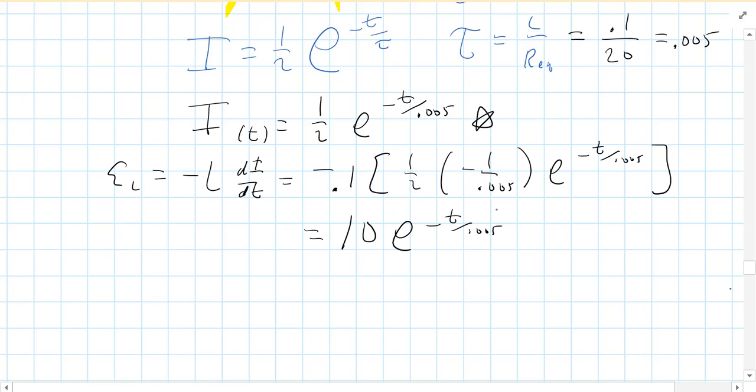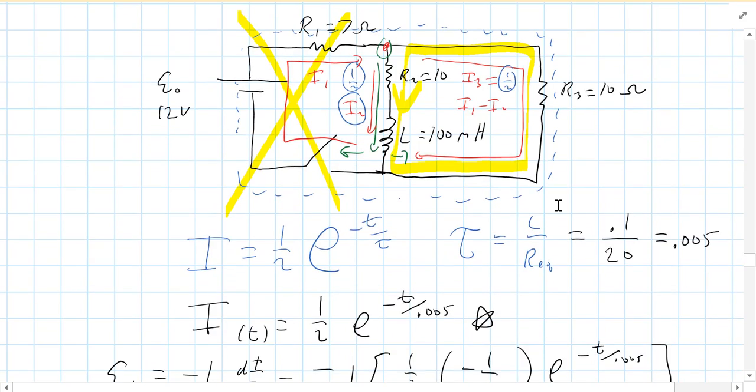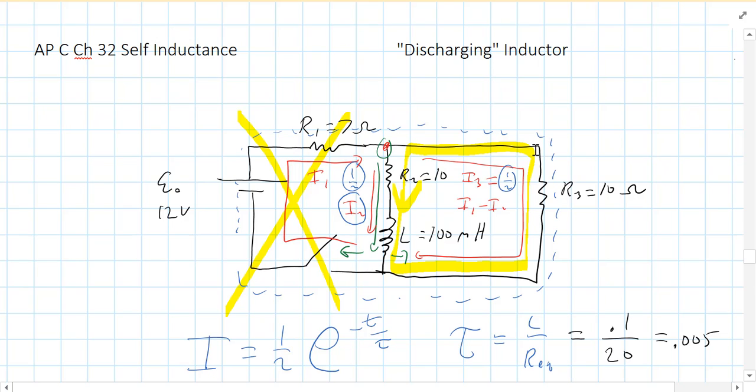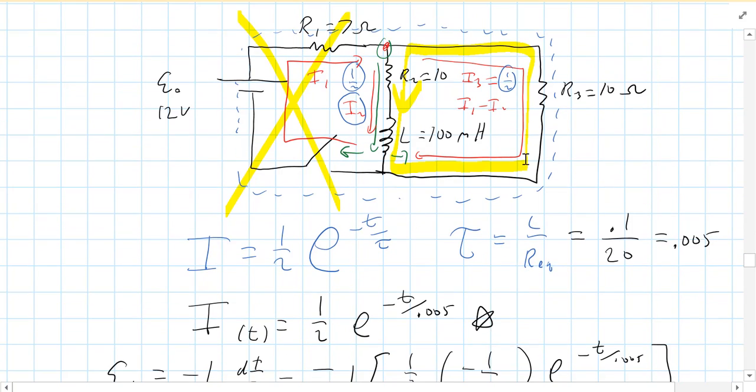Now, having said that, notice it's positive. It's positive because it's going to try to keep the current flowing the way it was. I2 was flowing down before we opened the switch. The inductor is going to basically replace what the battery was doing for us. It's going to keep current flowing down through the center of the circuit. Now, by the way, the current through R3, that reverses, but there's no inductance over there, so that's fine. That current can change as quickly as it wants.